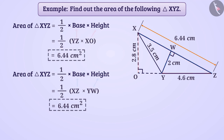Therefore, in both cases, the area of the triangle is the same. With the help of the length of one side of the triangle and its corresponding height, the area of the triangle can be calculated. It is not necessary that the length of all sides should be known.